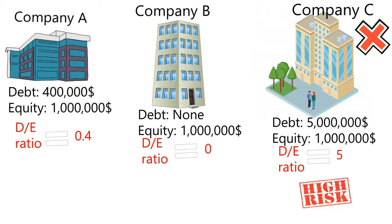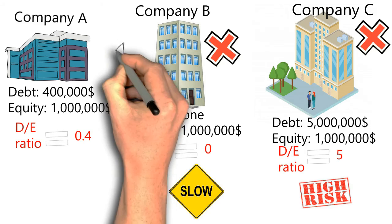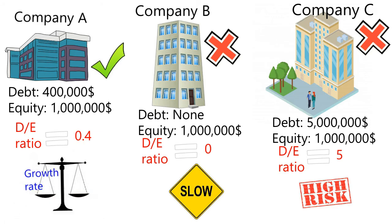Company B is good. However, we will not choose Company B as it does not have debt at all. The business operation is slow as they depend solely on their assets, and this business also grows at a slower rate. Company A is the best choice among these three companies, because the debt to equity is only 0.4. It has a balance between growth rate and risk, with a low chance of going bankrupt and a higher leverage and growth rate.